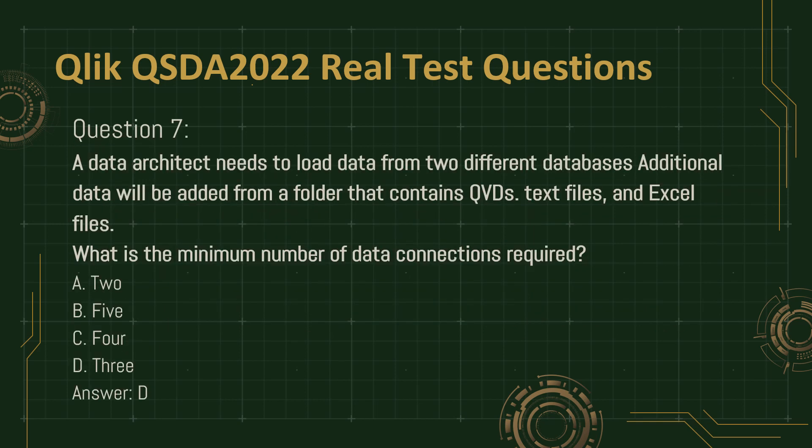Question 7. A data architect needs to load data from two different databases. Additional data will be added from a folder that contains QVDs, text files, and Excel files. What is the minimum number of data connections required? A. 2. B. 5. C. 4. D. 3. Answer: D.